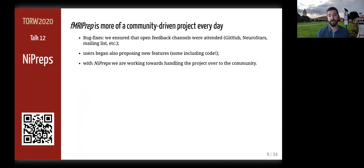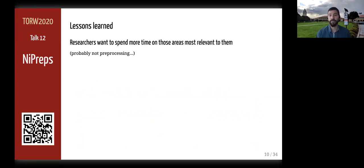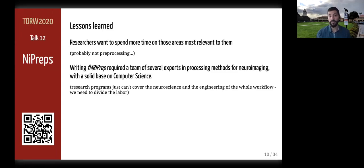To ensure the future sustainability of the project — what some developers call the 'bus factor' — we are transitioning the tool to NIPREPs, transferring the large community nurtured over the past four years with it. fMRIPREP gives scientific credit back in the form of publications; all contributors are invited to co-author these publications, and anything that helps the project is considered a sufficient contribution, even an exchange on GitHub issues. With the development of fMRIPREP, we understood that researchers don't want to waste their time on pre-processing, except for those actively developing new techniques. The current neuroimaging workflow requires extensive knowledge in sometimes orthogonal fields such as neuroscience and computer science.